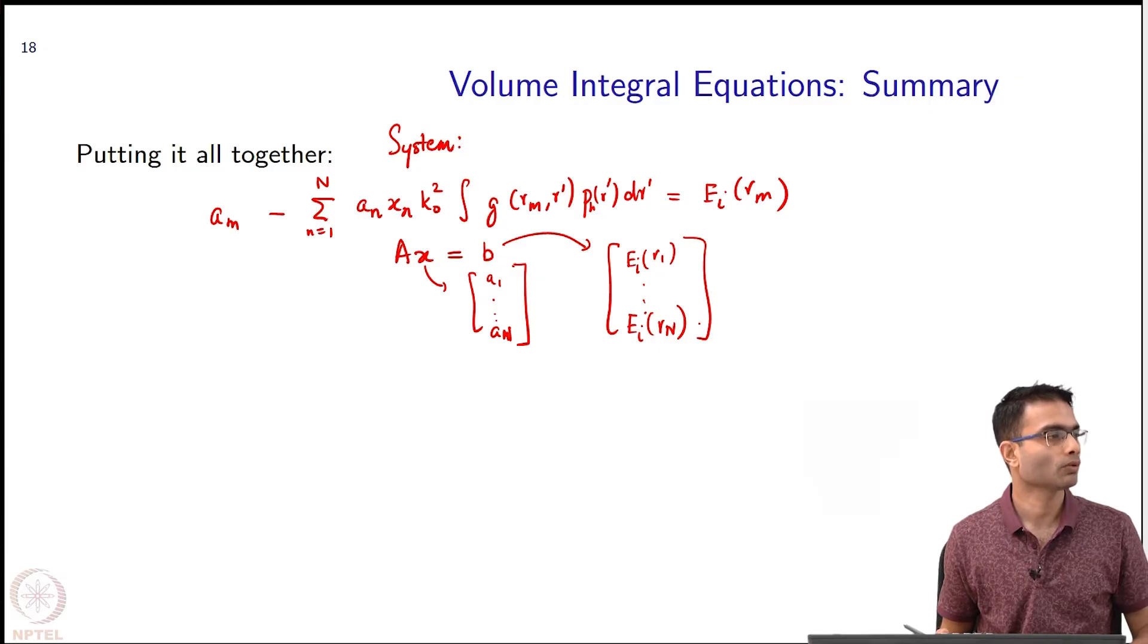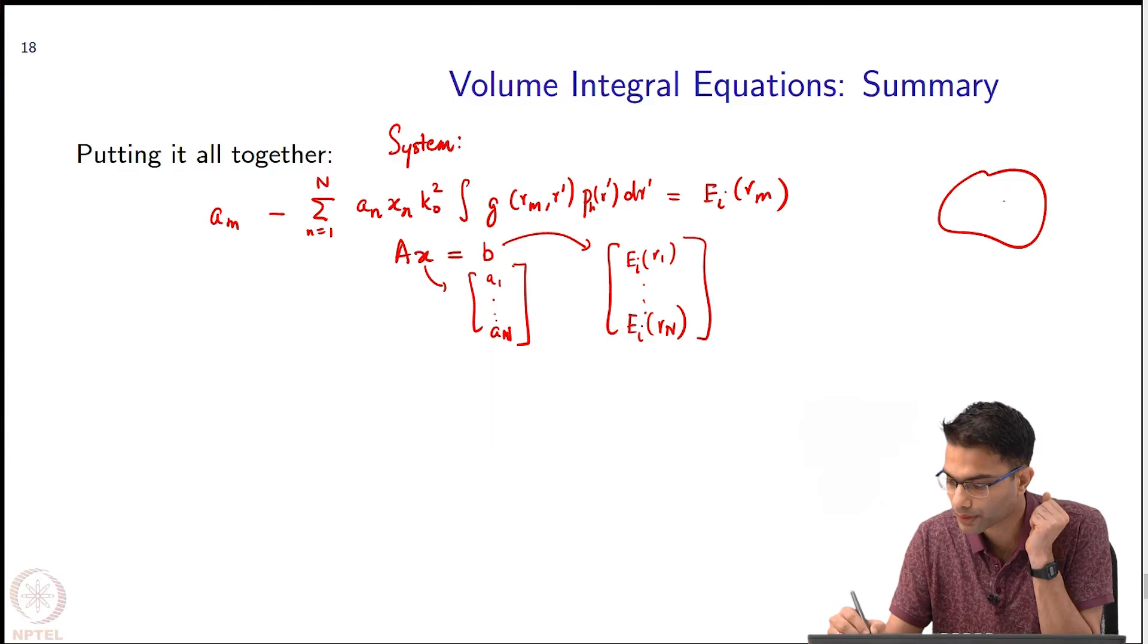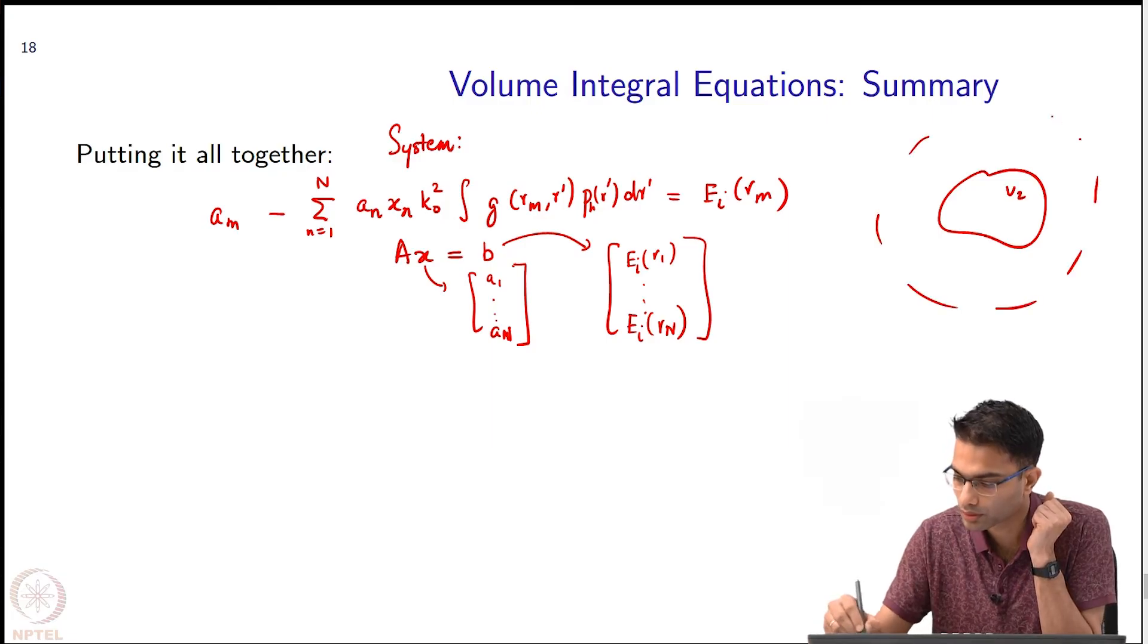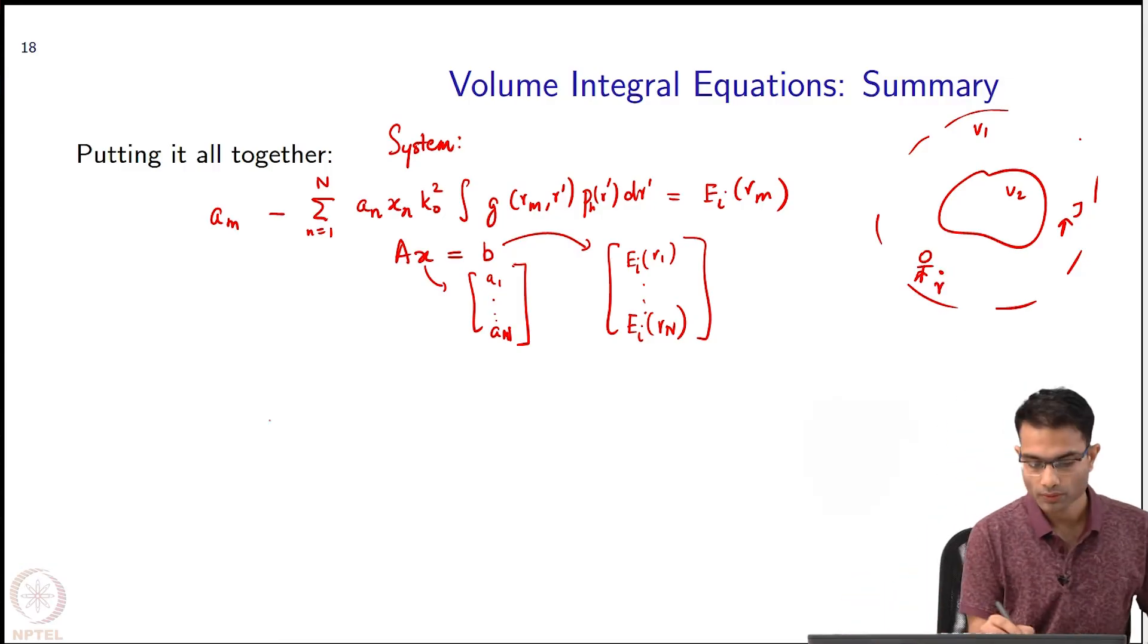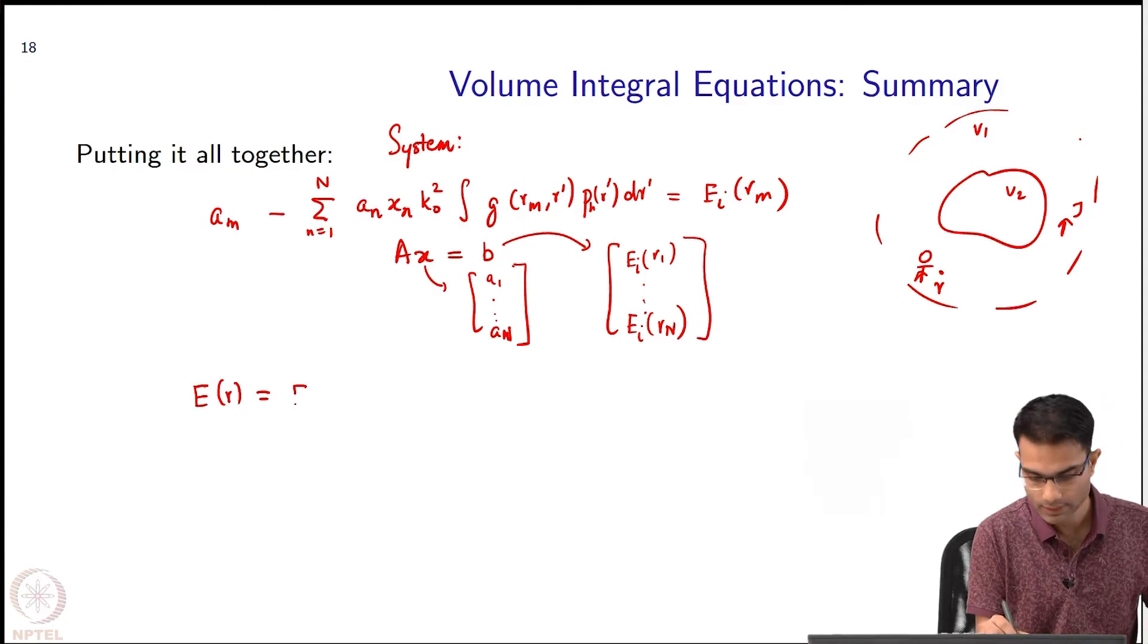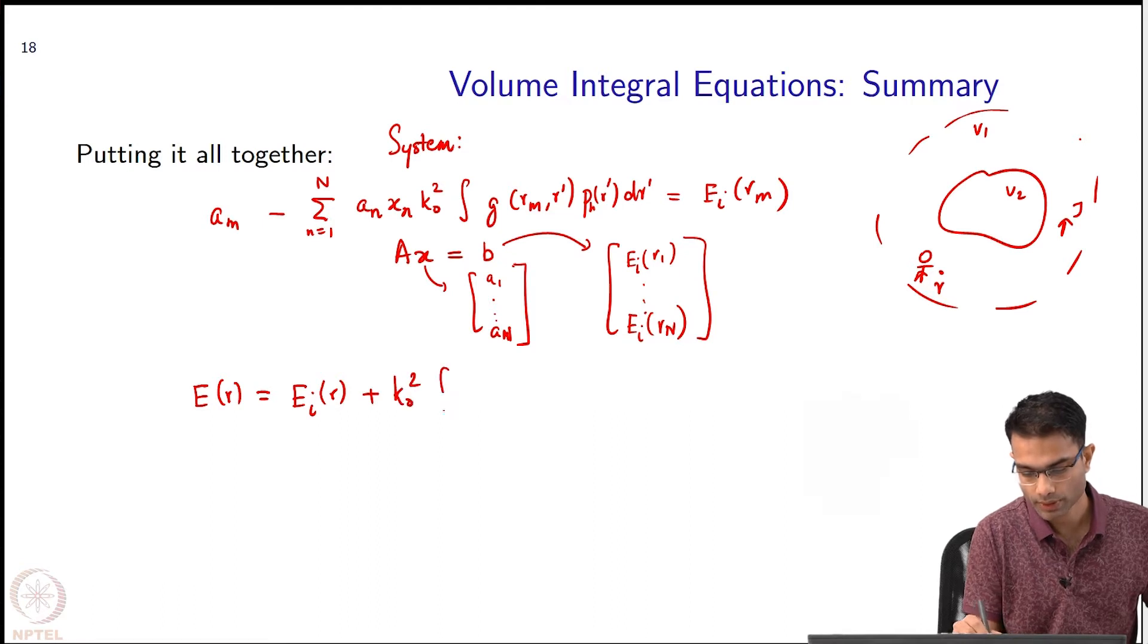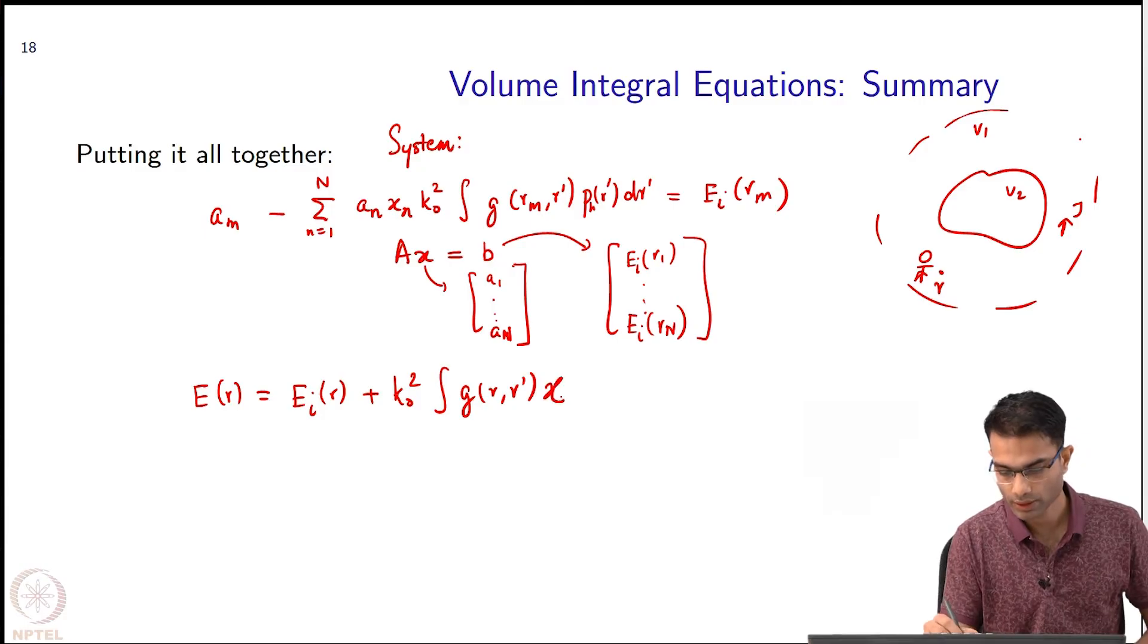So now we know pretty much everything. If I want to find out—now this was my original problem over here, V_1, and there is a current source over here. I am standing over here at location r. What is the field that I want to measure? I will write E(r) as E_i(r) plus k_naught squared times the integral of g(r,r') chi(r') dr'.